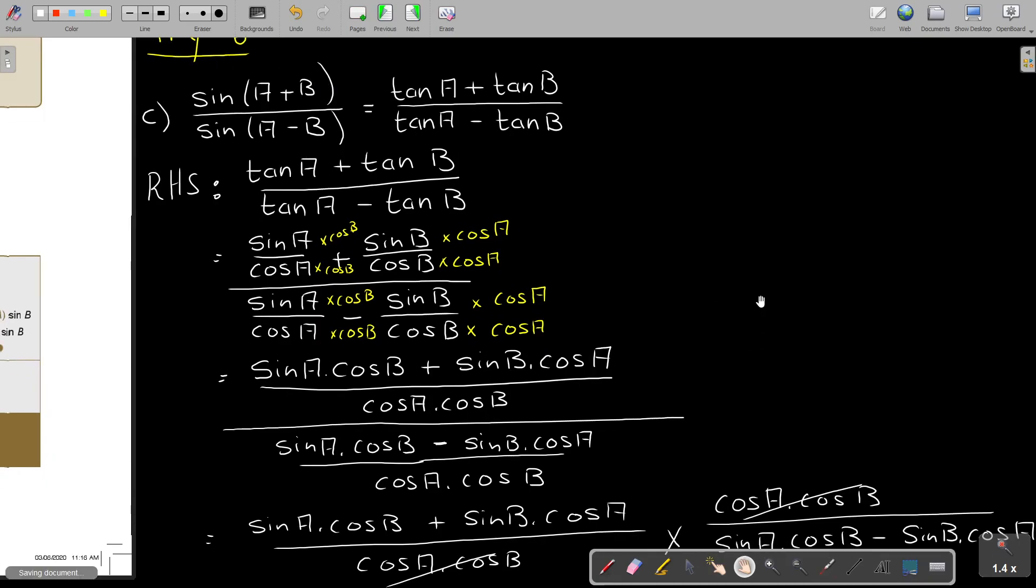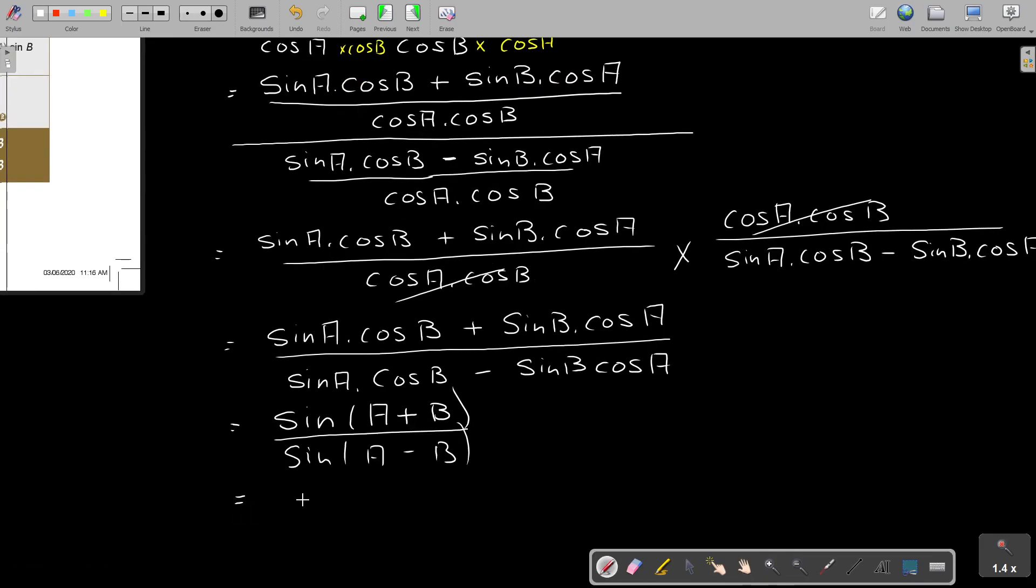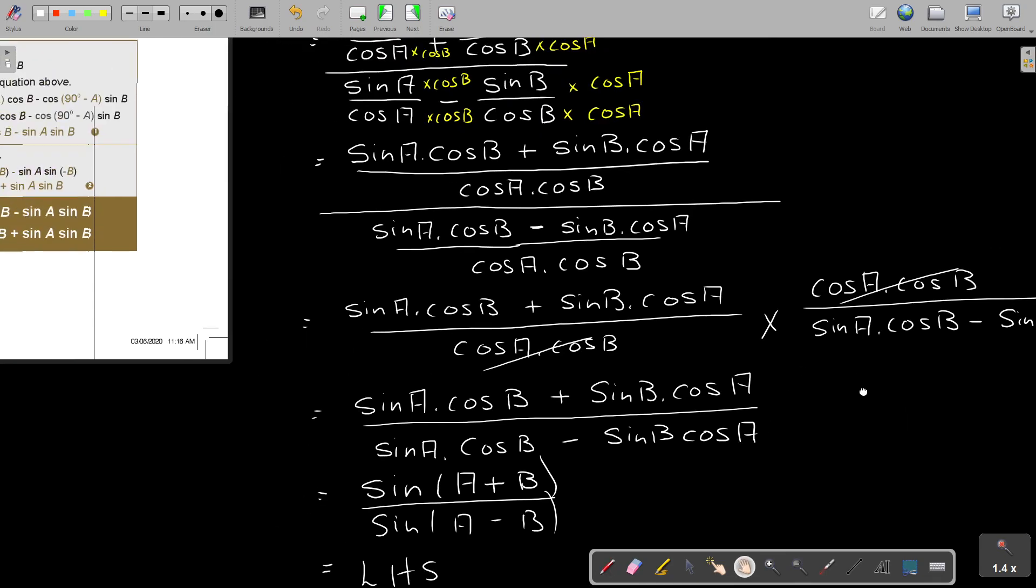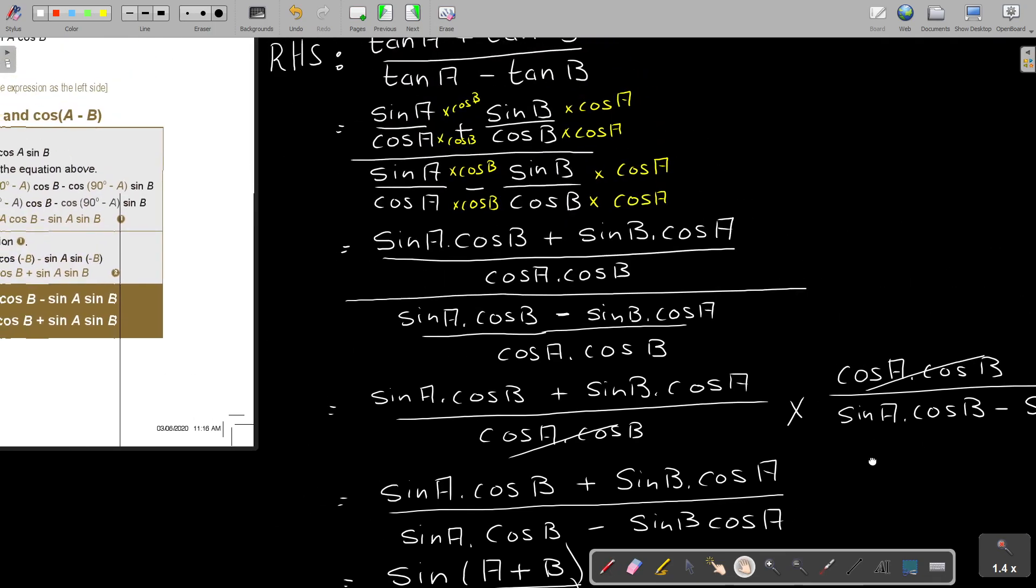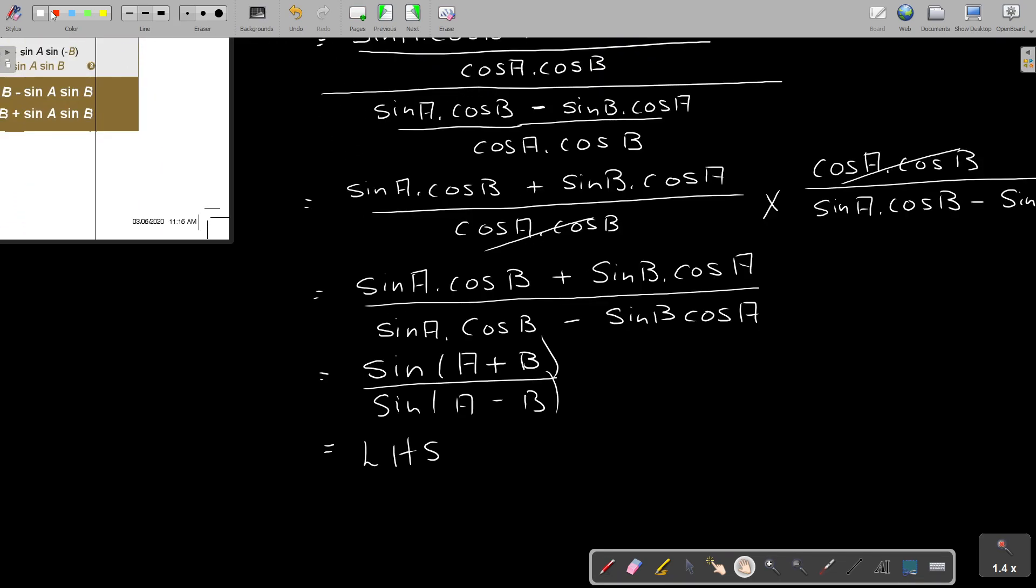And there is your rules again. Can you see that? Sin A cos B. So if I'm going to simplify this, it's sin(A+B). Please also take note of the reverse. And this is sin(A-B). And then, I'm looking up, and I'm saying it's equal. So it's equal to the left-hand side. And that's how you do it.